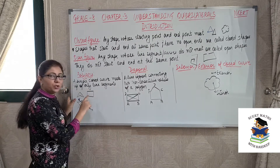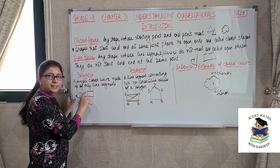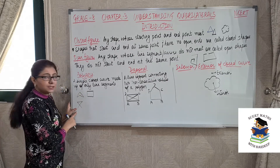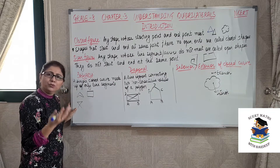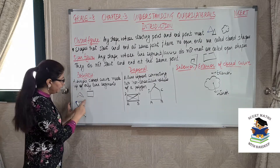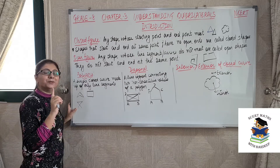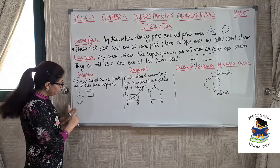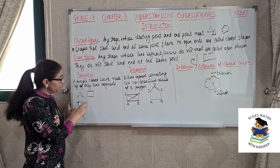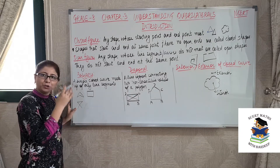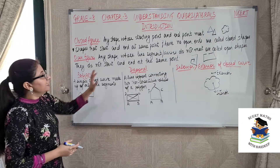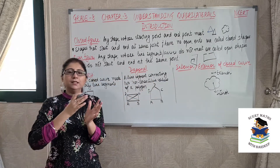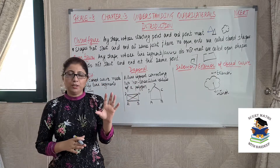For this shape also, same thing — it is made up of line segments and it is a closed figure. But for this shape, this is not a polygon. Why? Because one condition is fulfilled — it is made up of line segments — but the basic condition that it should be closed is not met, since its starting and ending points are not same. So this will not be referred to as a polygon. Next is diagonal.